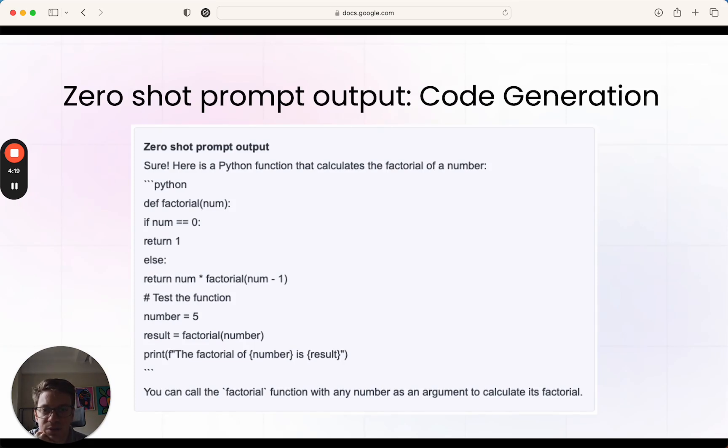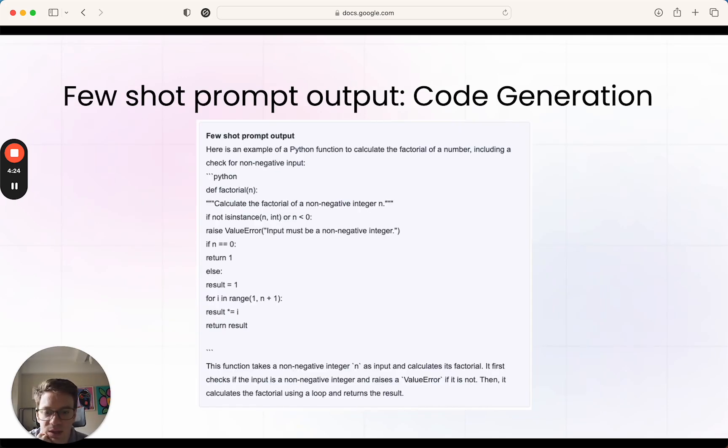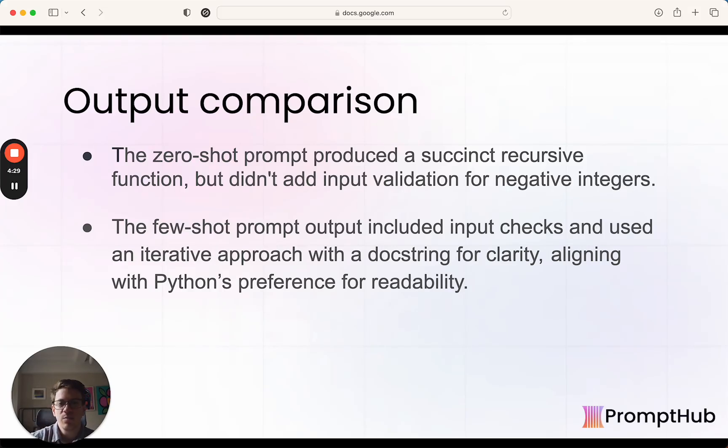We'll look at the outputs here really quickly. We have our summary of the differences at the end. The main one being the zero-shot prompt output produced a good function, but it didn't add any input validation for negative numbers, which you would need for a factorial function. The few-shot prompt did it—added input checks, used an iterative approach with a docstring for clarity, had better comments that kind of mimic the examples sent. Overall, it was more accurate, more maintainable, and things along those lines.